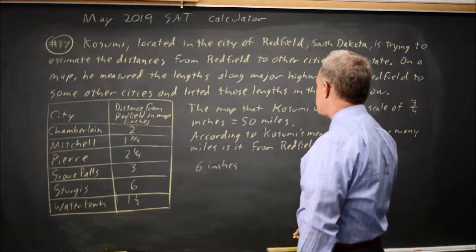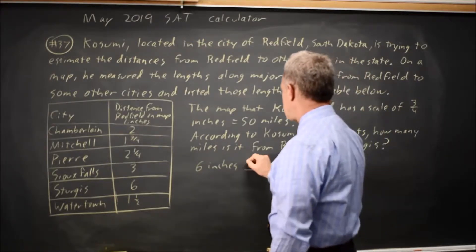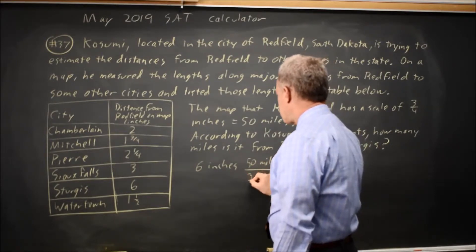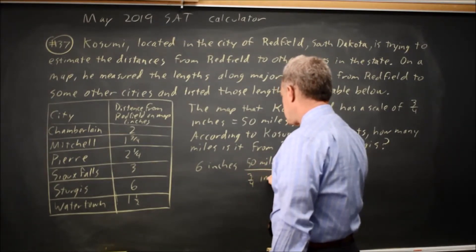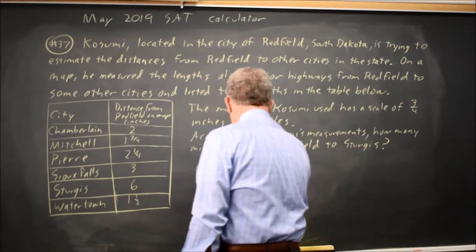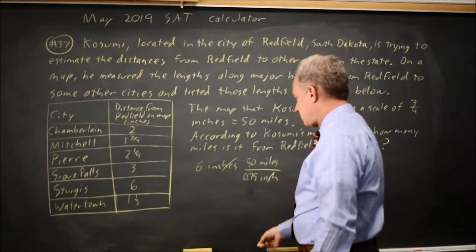We're given the ratio that three-quarters of an inch equals 50 miles. So 50 miles over three-quarters of an inch, which I'll write as 0.75 because it's more convenient. This ratio equals 1, inches cancel.